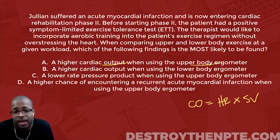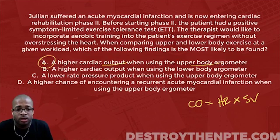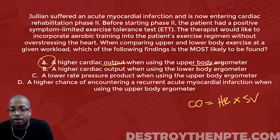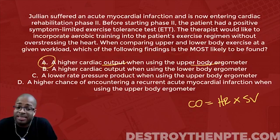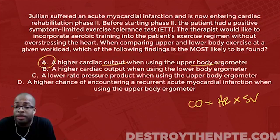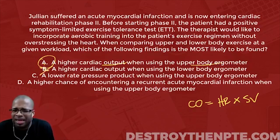So I like answer A — it fits the bill. But we have to confirm it's the best answer, so let's continue. Answer B says a higher cardiac output when using the lower body ergometer. We just spoke about that — the cardiac output is going to be much higher for the upper body than the lower body. So B is not going to be true. Using the lower body ergometer, cardiac output should not be higher there. We can eliminate B. A is definitely more correct than B.